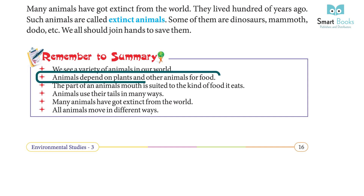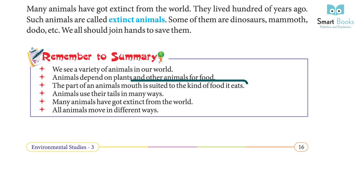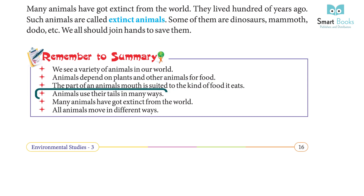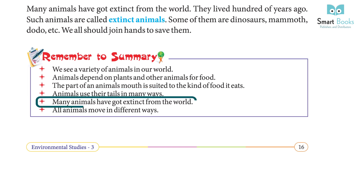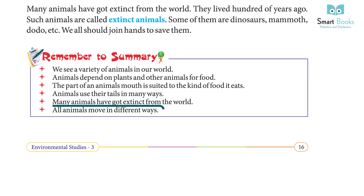Summary: we see a variety of animals in our world. Animals depend on plants and other animals for food. The part of an animal's mouth is suited to the kind of food it eats. Animals use their tails in many ways. Many animals have gone extinct from the world. All animals move in different ways.